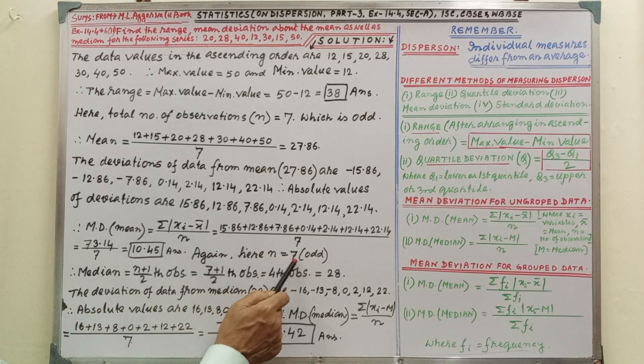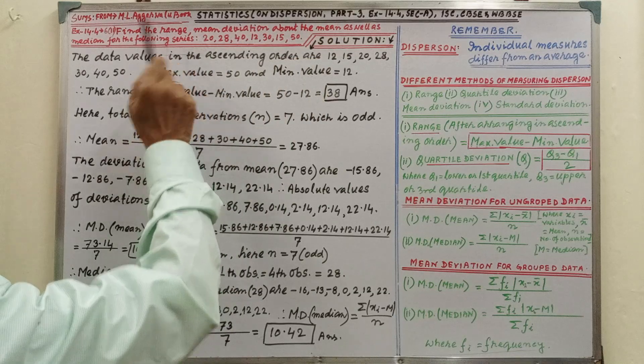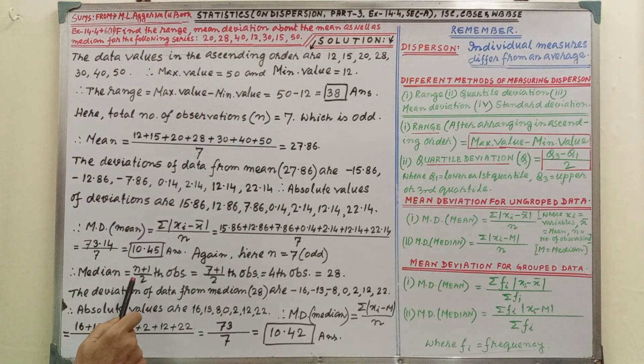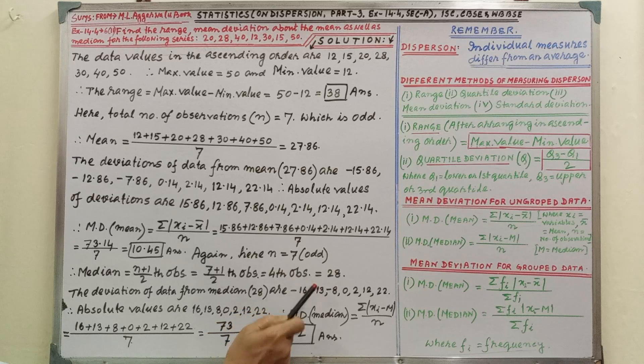Again here n equal to 7, n odd numbers, and median we have to find out, that is n plus 1 by 2, that is 7 plus 1 by 2, that is fourth observation. Fourth observation will be the median, 1, 2, 3, 4, that is 28.